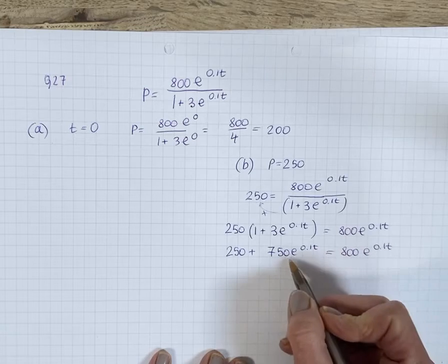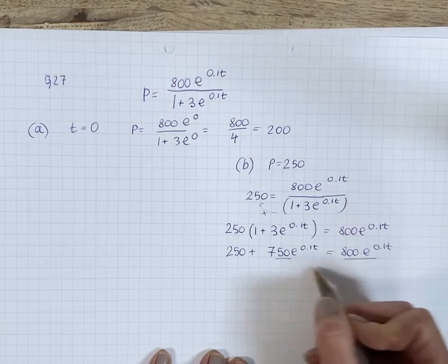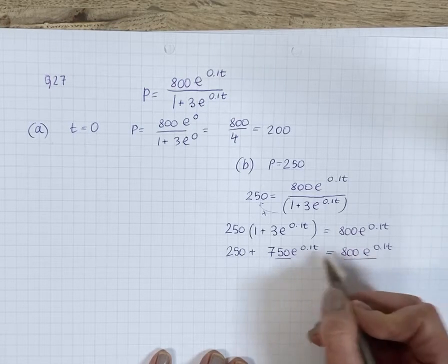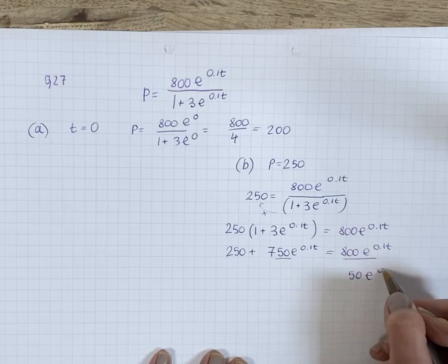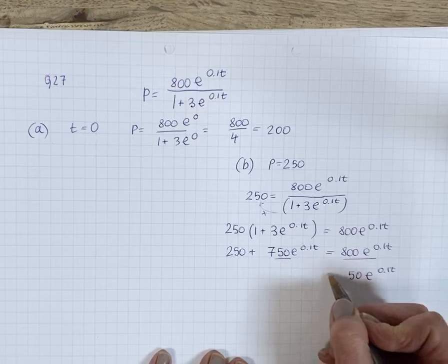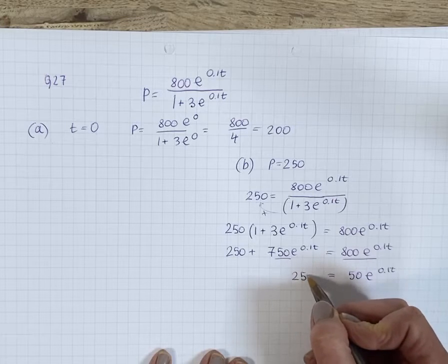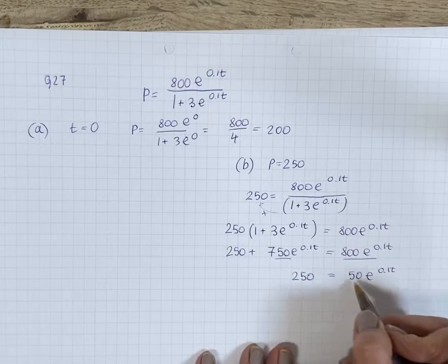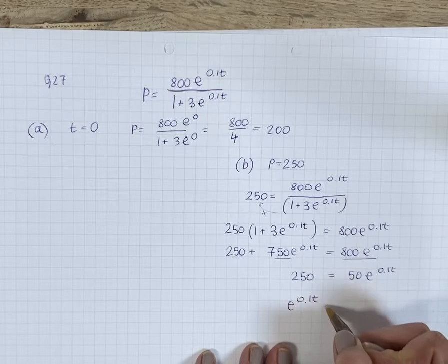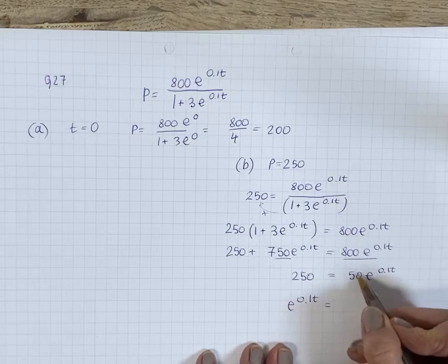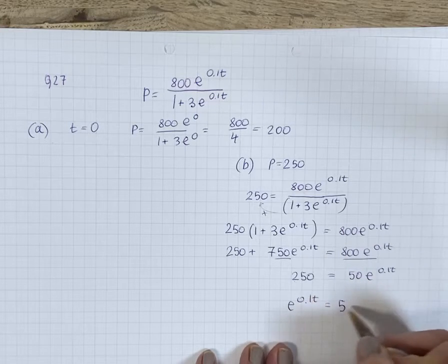Put these two terms on one side, so 800 subtract 750 is 50, and then divide by 50. I'll move e on that side as well, so it's going to be 5.